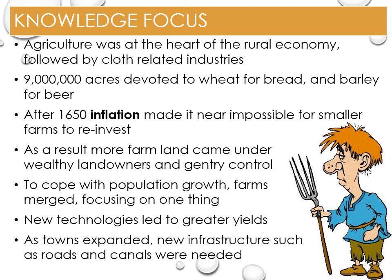As the towns in England grew — by 1781 15% of the population lived in towns, a growth of 3% over the century before — new infrastructure was required to move the produce of agriculture to the markets in towns. Investment in roads, the first toll road in 1662, and improvements in rivers and canals saw massive improvements in the transportation of goods in England.